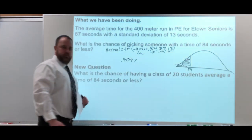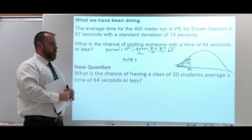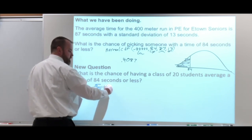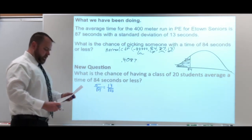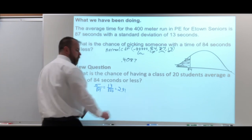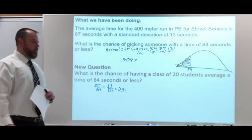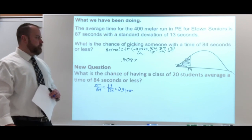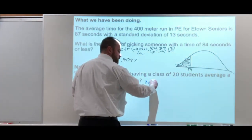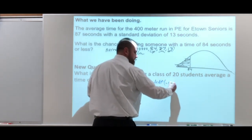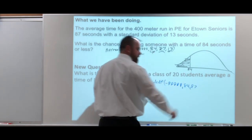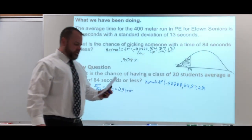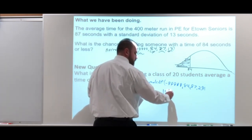Now we're looking at a sample of 20 people. We assumed the distribution is normal, so we have to calculate our new standard deviation. Sigma divided by the square root of n would be 13 divided by the square root of 20, and I'm going to use 2.91 — go ahead and plug that in to double-check my work. That is the new standard deviation for the sample means. So if I do my normal CDF again, everything is the same except instead of 13 I'm plugging in 2.91. This time it drops down to 0.1513.